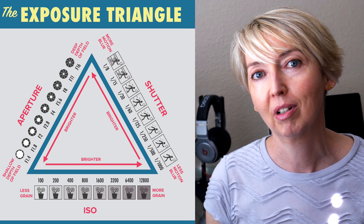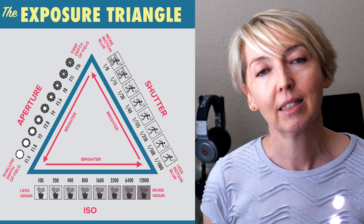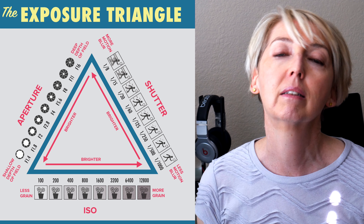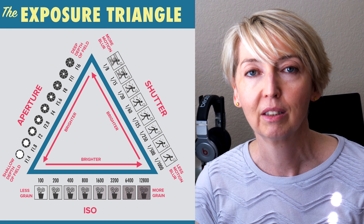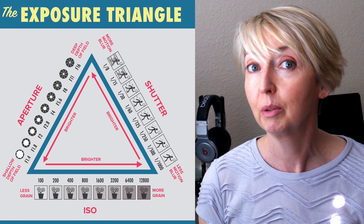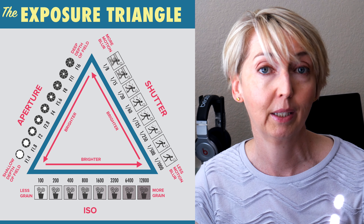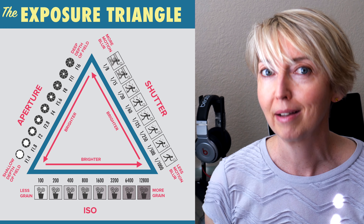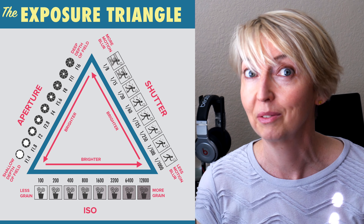The exposure triangle consists of three things: aperture, shutter speed, and ISO. If you know how to work with those three things and control the light in the camera, then you've got the basic camera settings for video.